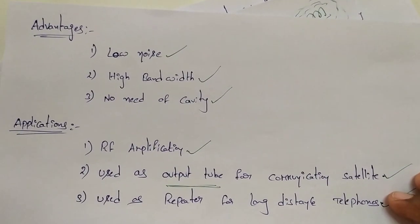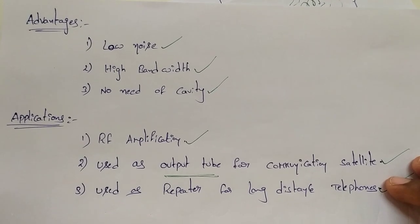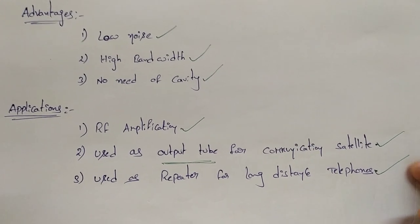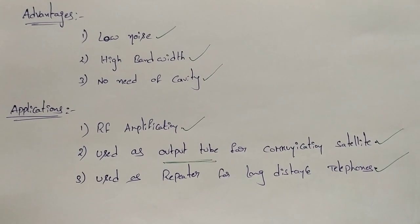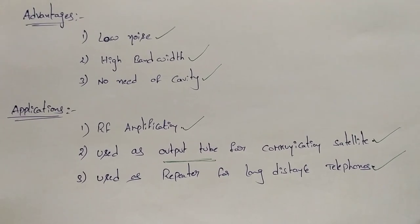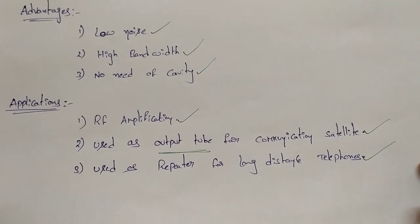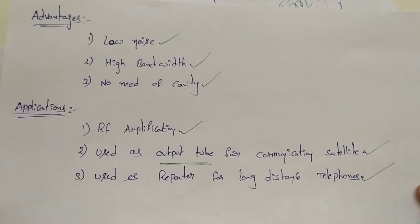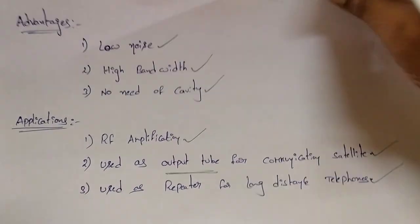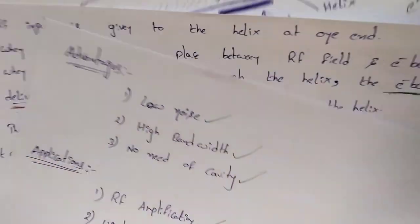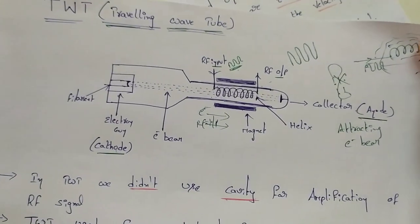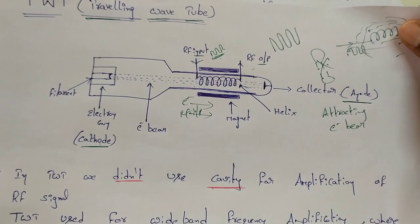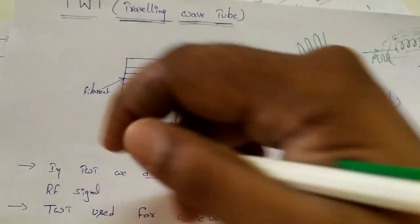Advantages include low noise, high bandwidth, and no cavity requirement. Applications are: RF amplifier, satellite output tubes, and telephone repeaters for long-distance communication. Hope you all understand this — the diagram is important. Thank you so much.